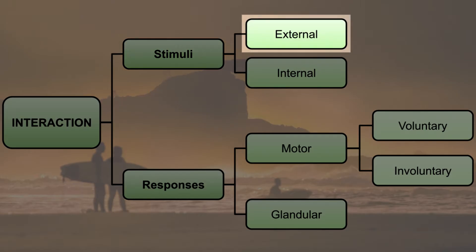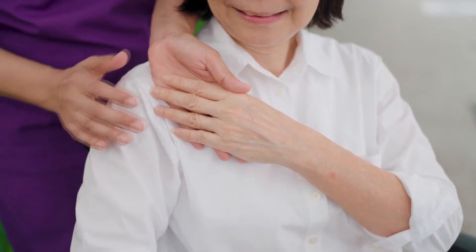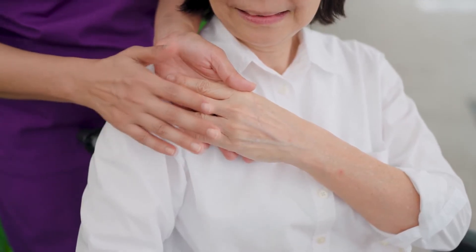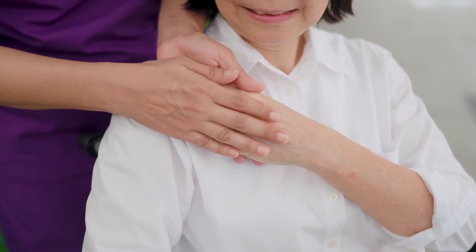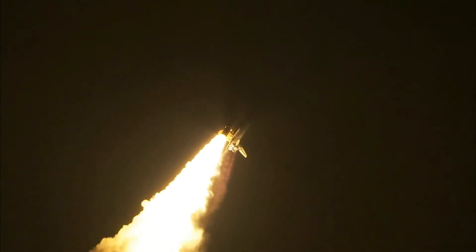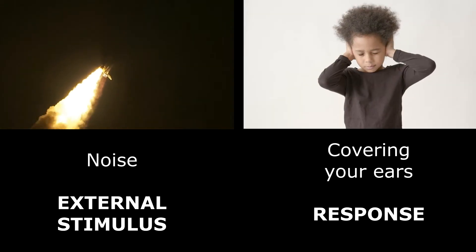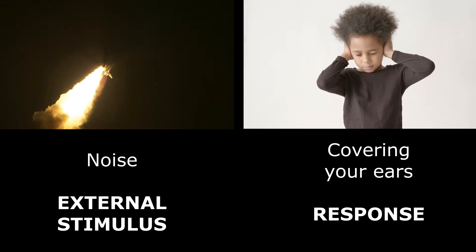External stimuli. These come from outside your body. They are things like sounds, sights or touches that happen around you. For example, if you hear a loud noise, you might cover your ears. The noise is the external stimulus and covering your ears is the response.